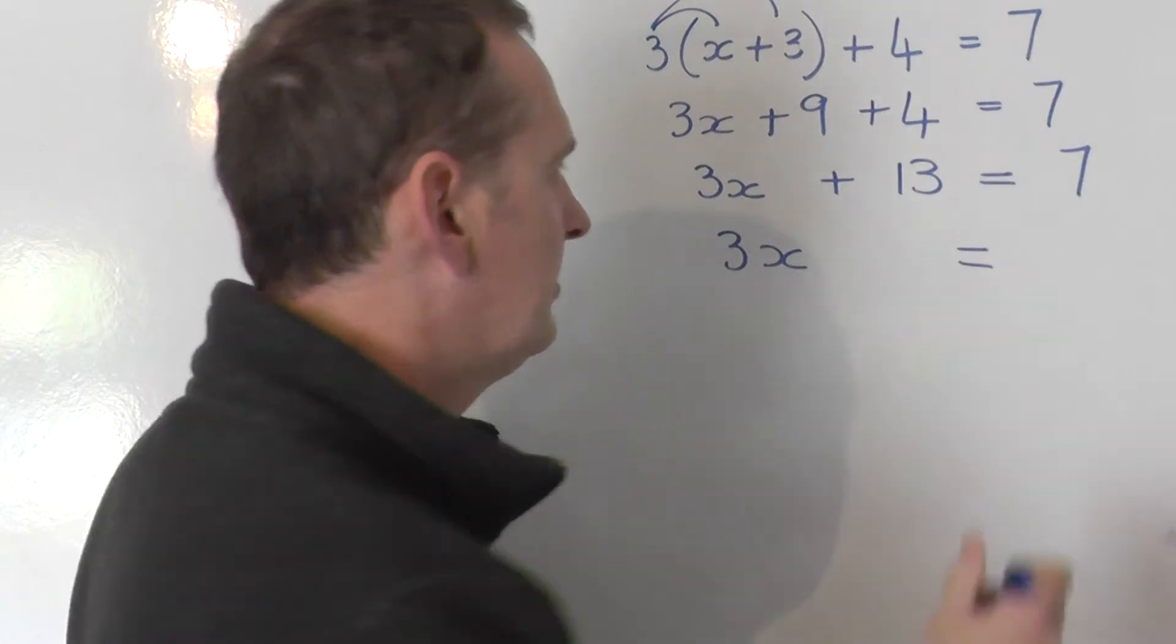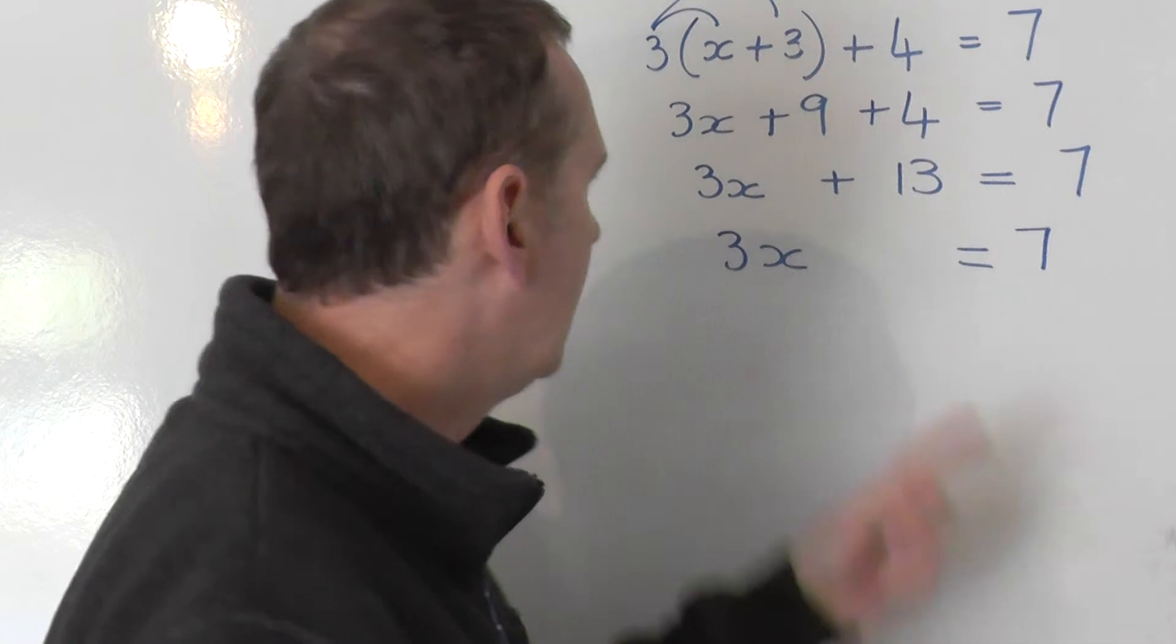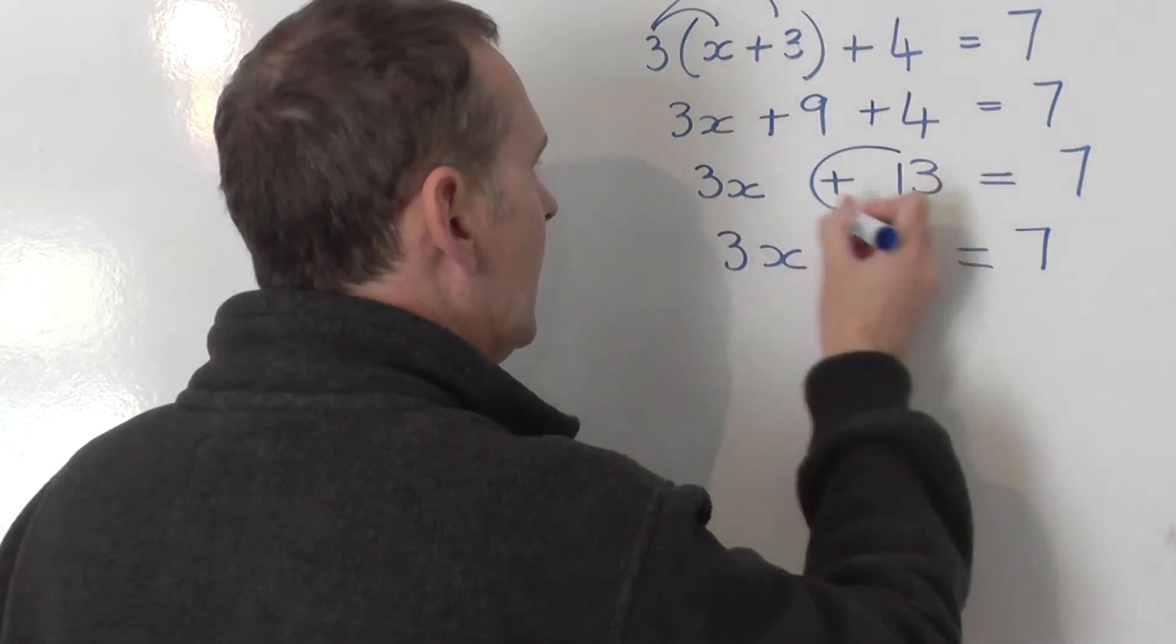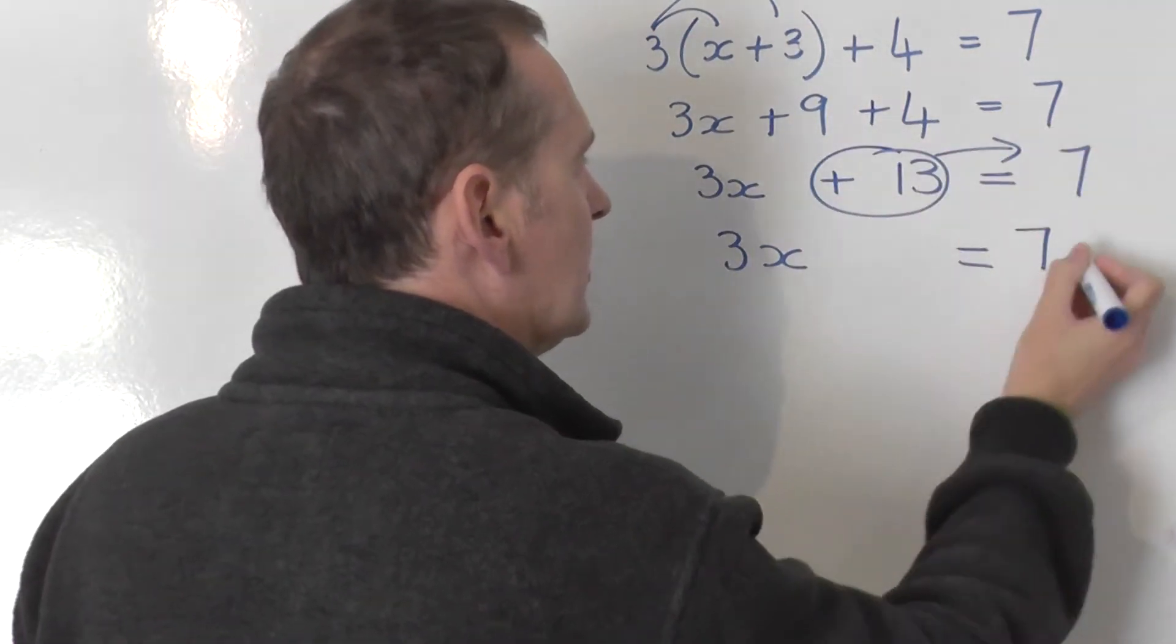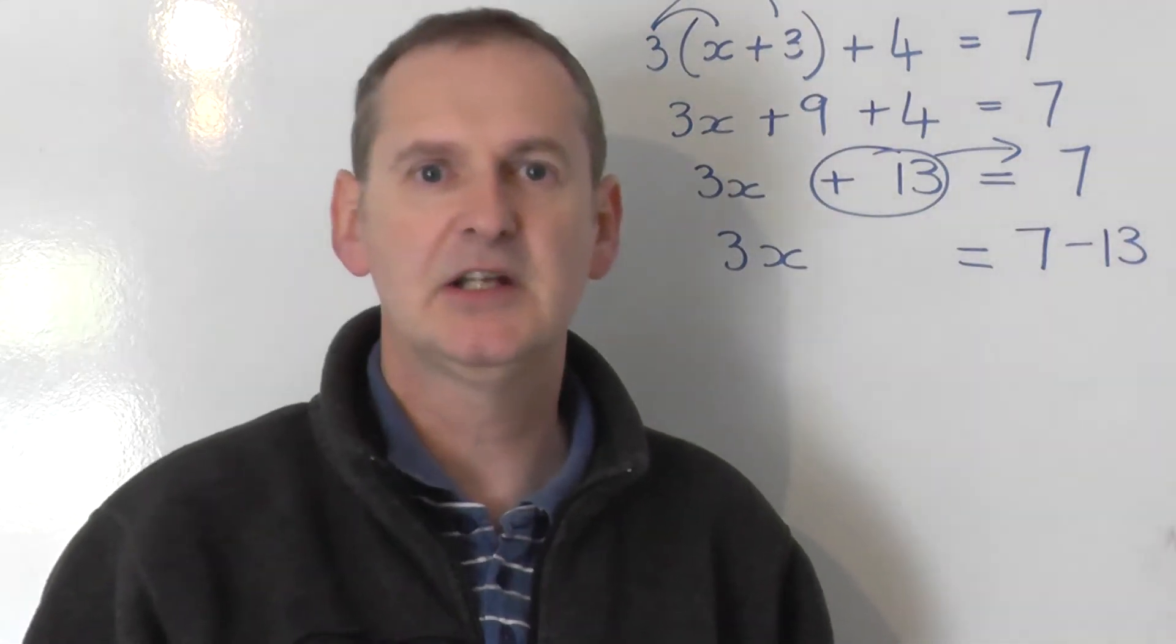Well, the 7 is already on the right so I'm happy where it is. It doesn't change side so it doesn't change sign. And the positive 13, well that gets dragged across to the other side. It swaps and becomes a negative 13 on the right hand side.